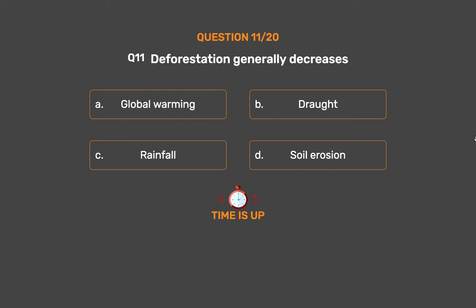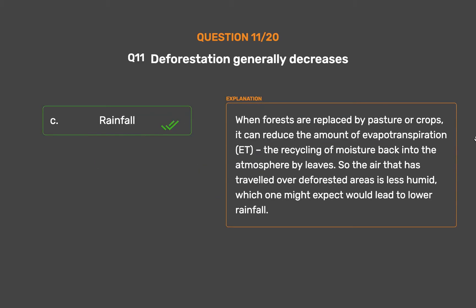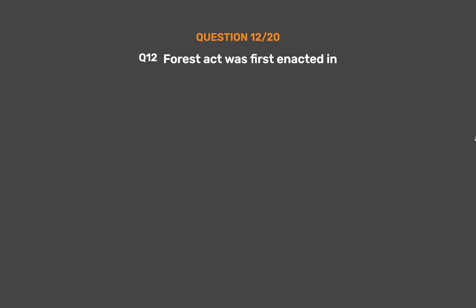Question number eleven: deforestation generally decreases underscore. Option A: global warming. Option B: drought. Option C: rainfall. Option D: soil erosion. The correct answer is option C, rainfall. When forests are replaced by pasture or crops, it can reduce the amount of evapotranspiration (ET) — the recycling of moisture back into the atmosphere by leaves — so the air that has traveled over deforested areas is less humid, which would lead to lower rainfall.